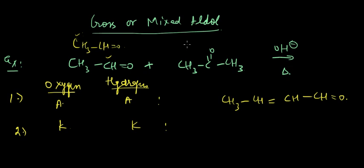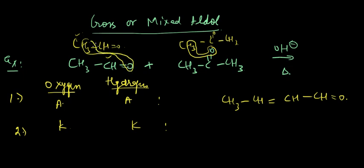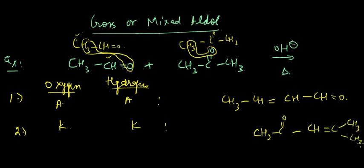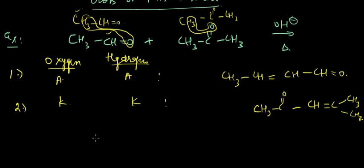Second would be oxygen coming from the ketone and hydrogen also coming from the ketone — just imagining one more ketone here. After the dehydration step, we'll be getting something like CH3-CH=C(CH3)-CH3.